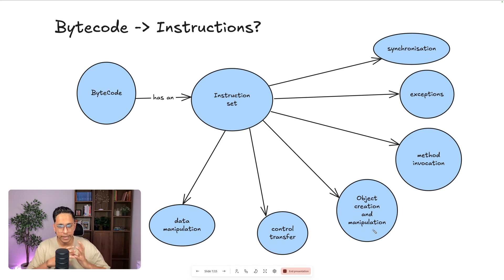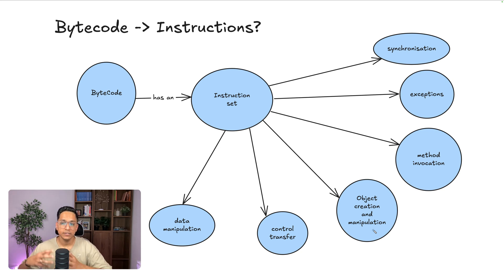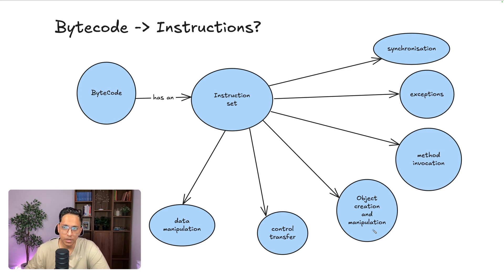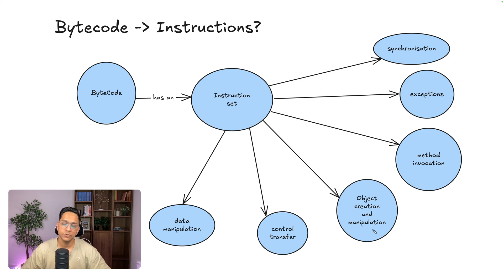Object creation is another instruction class — you need to encapsulate behavior inside an object, create it, allocate memory, and handle potential growth, all of which the JVM abstracts away. Method invocation supports not only non-native Java methods but also native methods — platform-level specific methods like calling a C library or Unix kernel-level functions. There are specific instructions for those. Exception handling is also covered — when your program encounters a state it cannot handle, it's wrapped in exceptions, with instructions to handle the control flow. And synchronization — in a concurrent environment with multiple threads sharing memory, you need to synchronize, otherwise you lose data consistency and face race conditions and other multithreading problems.